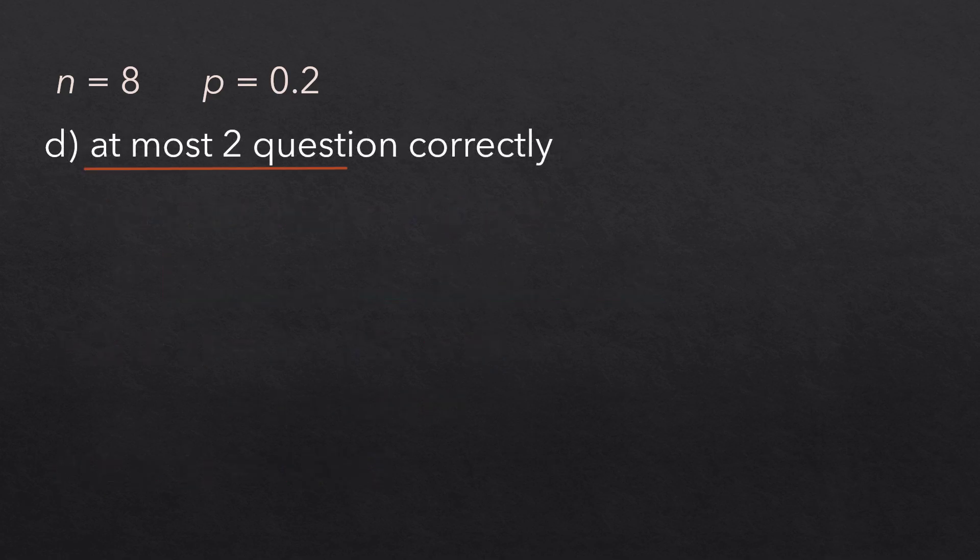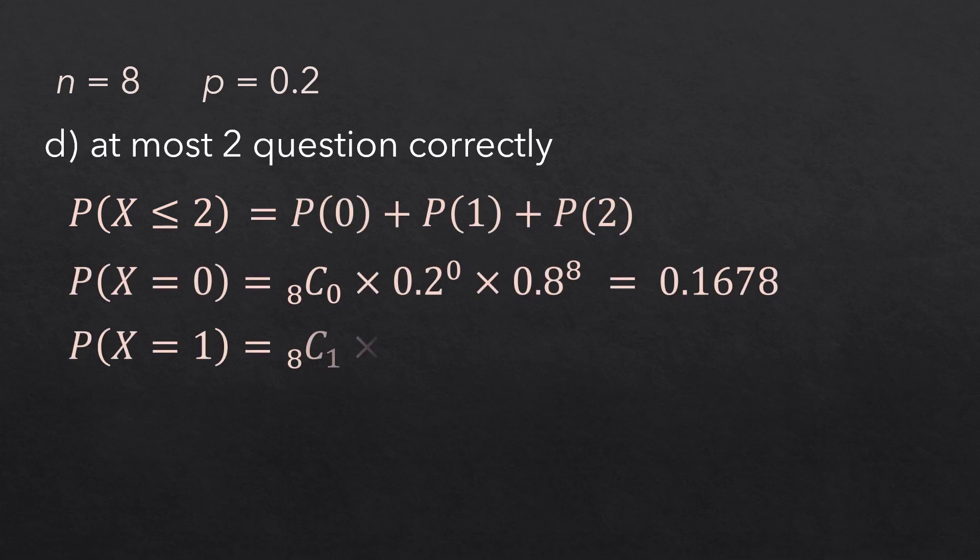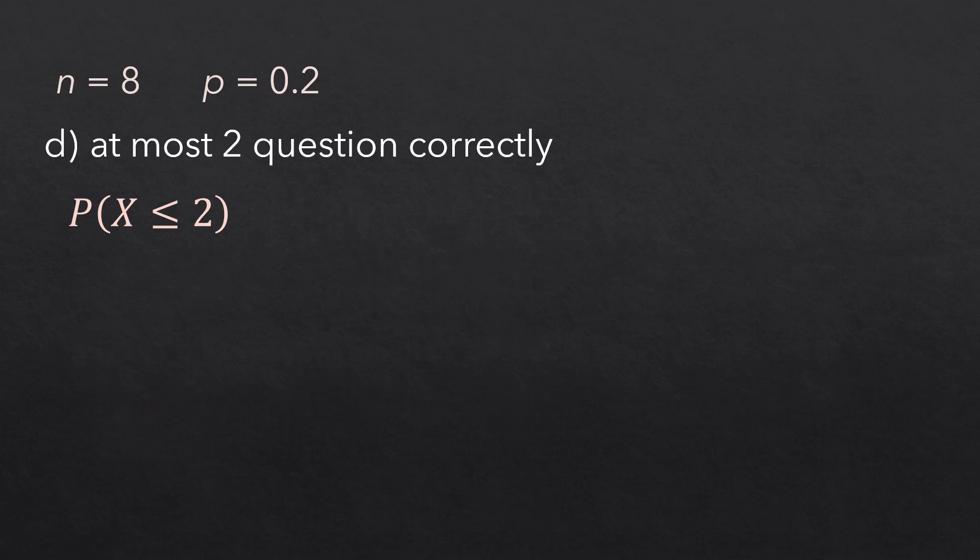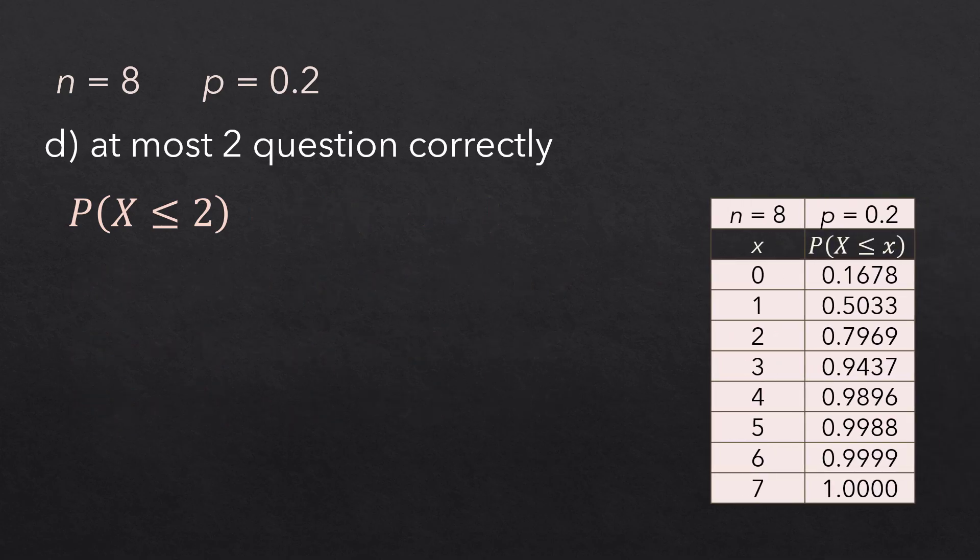Next, at most 2 questions correctly. At most 2 means x is less than or equal to 2. That is, x is 0, 1 or 2. Plugging those into the formula, we have a total of 0.7969. And using the cumulative binomial table, we see that the probability that x is less than or equal to 2 is 0.7969.